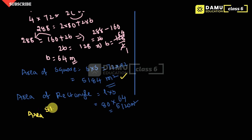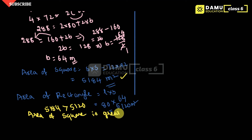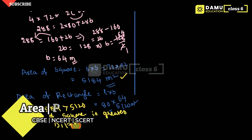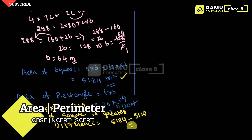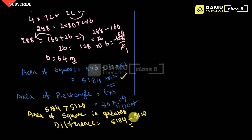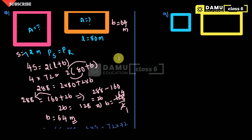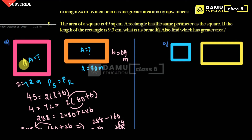Area of square is greater. The difference equals area of square minus area of rectangle, which is 5184 minus 5120, and you will get 64 meter square. So the area of square is greater by 64 meter square.